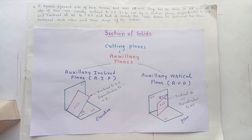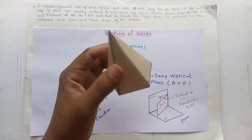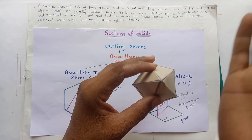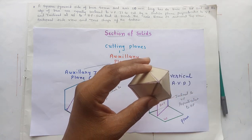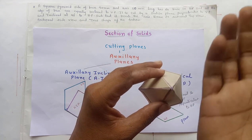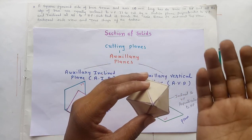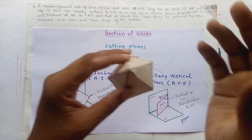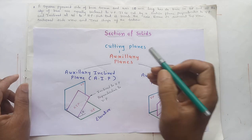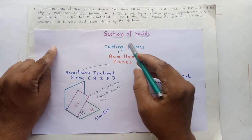Hello everyone, today we are going to learn about section of solids. We have to take a solid, cut a section of it, and then observe the section part. To cut the solid we have to take a cutting plane.